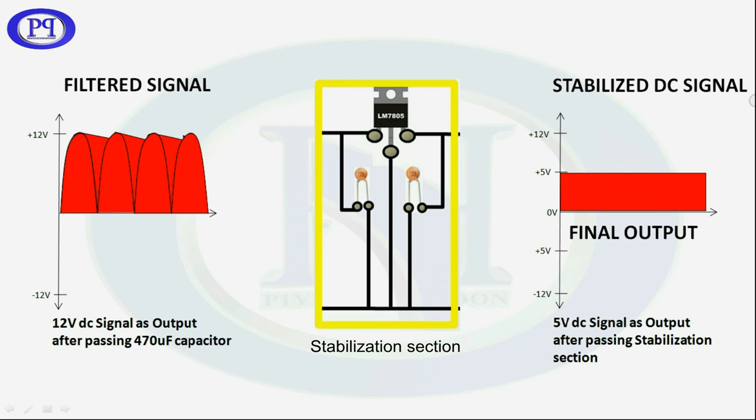We are getting 5 volts instead of 12 volts because we are using 5 volt voltage regulator IC in the stabilization section, and hence we are getting 5 volt regulated DC as an output.